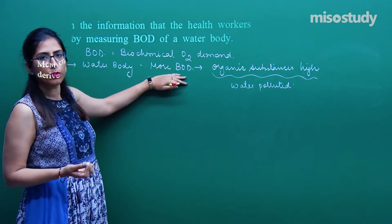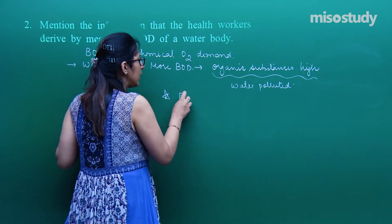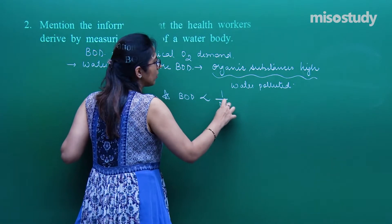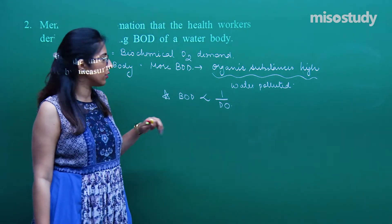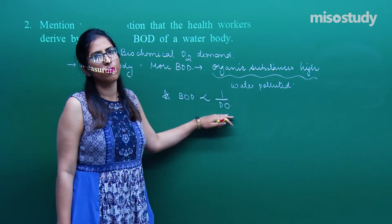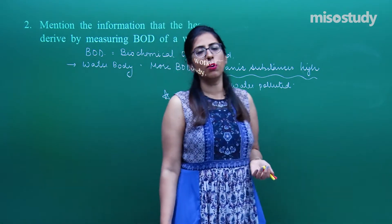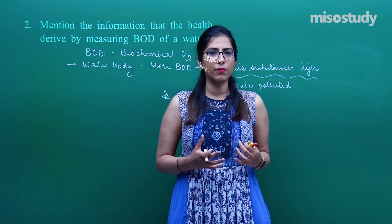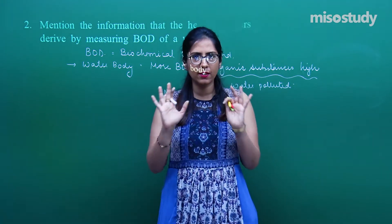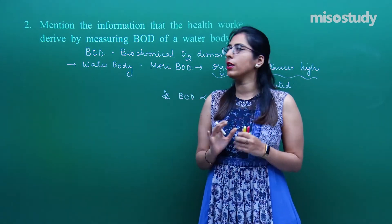When BOD is high, it is in an inversely proportional relationship with DO — dissolved oxygen. If BOD is very high, dissolved oxygen will be very low, meaning the biotic components of that water body will not be able to survive for long. So the water must be treated. I hope the significance of BOD is now clear.